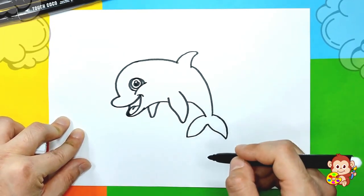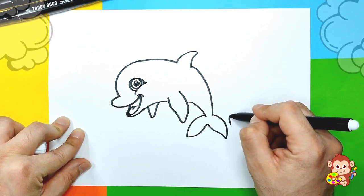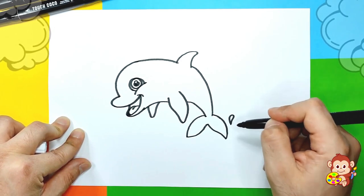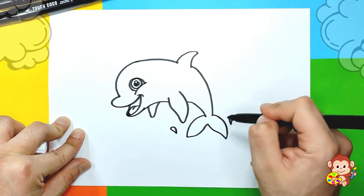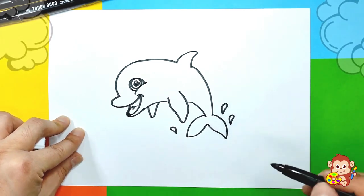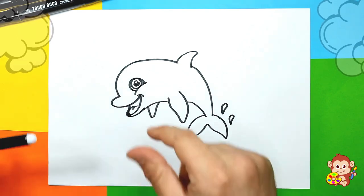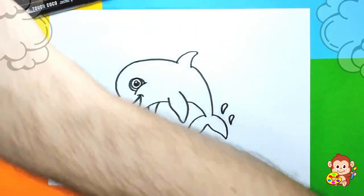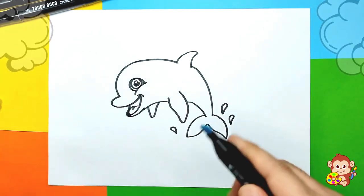You know what we could add? We could add a little drops of water, like he's jumping from water, just like that. We can color them later blue.